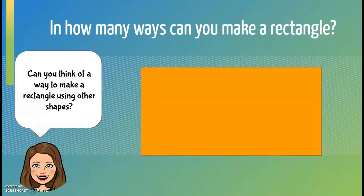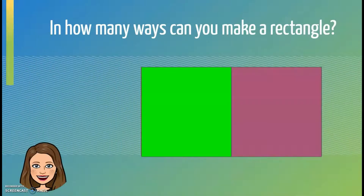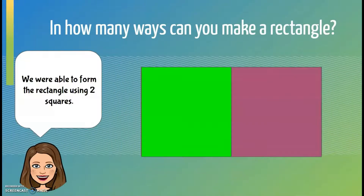Can you think of a way to make a rectangle using other shapes? A square and another square. We were able to form a rectangle using two squares.